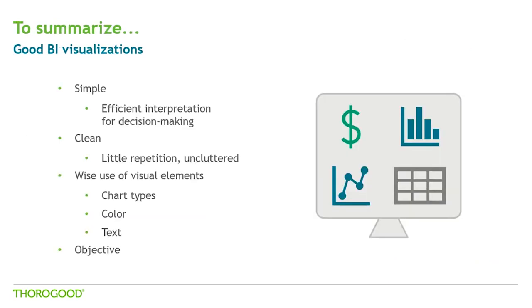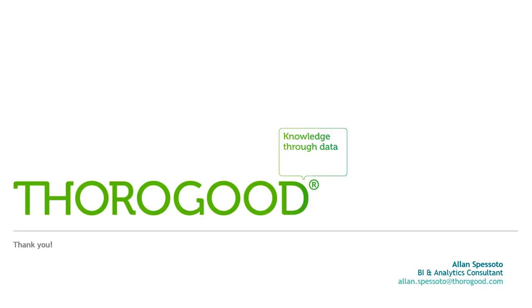To summarize what we've seen, typically good visualizations in business intelligence and analytics systems have these characteristics: they're simple and provide an efficient interpretation that helps users understand what's happening and make decisions quicker; they're clean with little repetition, enough white space, and a screen that's not cluttered with information; they employ a wise use of each visual element like chart types, color and text; and finally they're very aligned to the business strategy and objectives, so everything you display is actually useful. Thank you, and I hope you enjoyed the content and examples today. Feel free to get in touch if you have any questions or want to discuss this topic further.